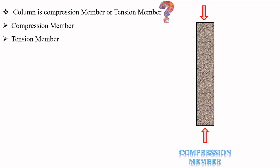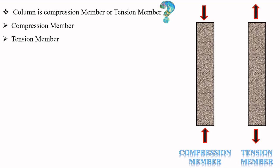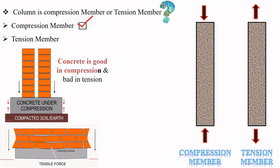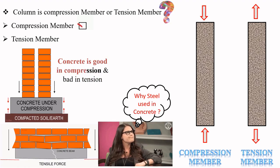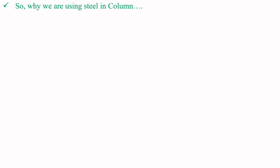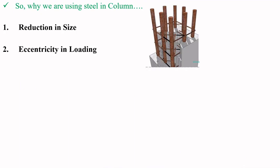If I ask you — is a column a compression member or a tension member? Many of you will say the right answer: it is a compression member. We are aware that concrete is good in compression and bad in tension. Since a column is a compression member and concrete takes the compression, the question arises: why is steel used in concrete? Simply put, steel is used for reduction in size — because steel is also good in compression and helps reduce the size of the column member.